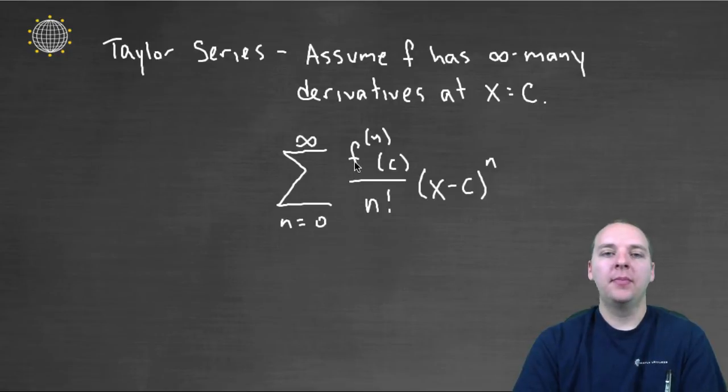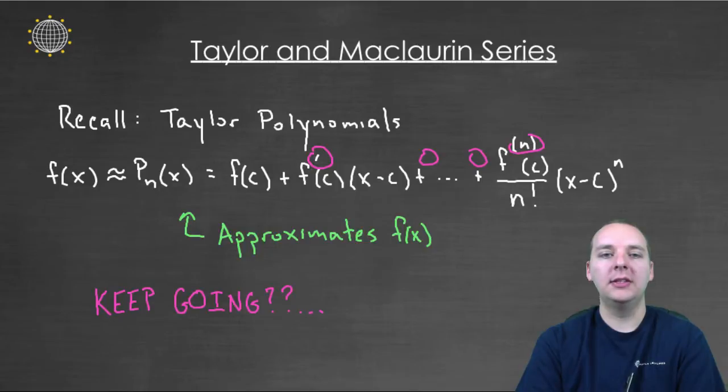Well each term would have a certain derivative of f evaluated at c, divided by that term factorial, that number factorial, times x minus c raised to that power. And so you can see this happening here, for all these individual terms.